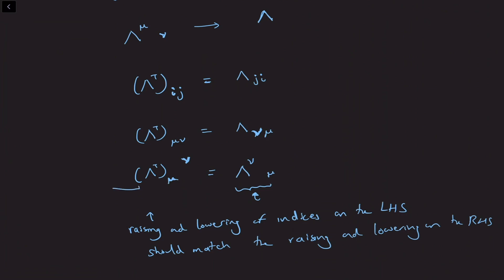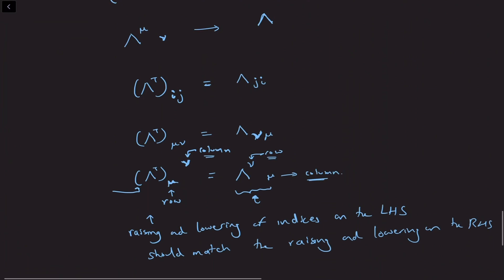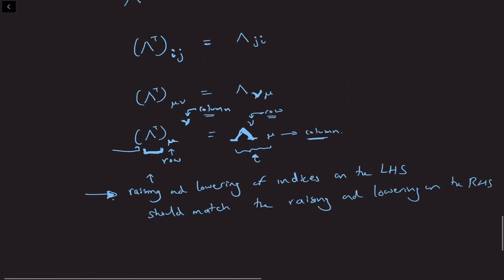On the left-hand side of this equation, mu is actually a row index for lambda transpose and nu is a column index, whereas on the right-hand side, nu is a row index and mu is a column index. So the rule we prefer is: for the transpose matrix, we match the upper and lower indices not by whether it's a row or a column, but by comparing with the indices of lambda. This preferred rule overrides rule two for something like lambda transpose.